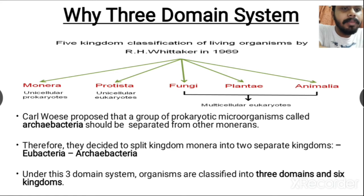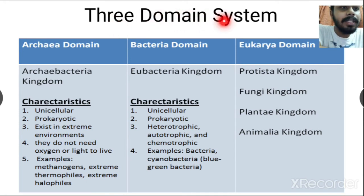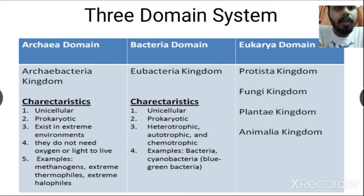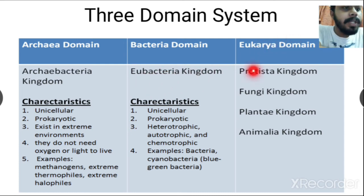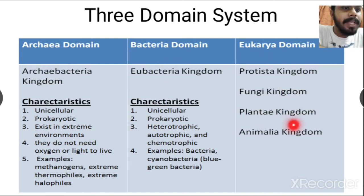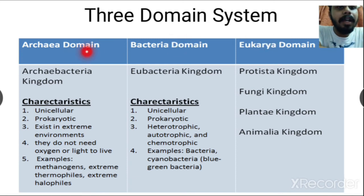The three domains are: Archaea domain, Bacteria domain, and Eukarya domain. Under the Archaea domain, the Archaebacteria kingdom is placed. Under the Bacteria domain, the Eubacteria kingdom is placed. Under the Eukarya domain, four kingdoms are present: Protista, Fungi, Plantae, and Animalia — totaling six kingdoms across three domains.